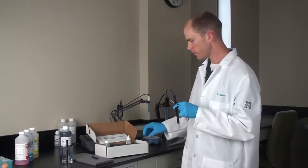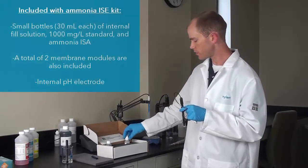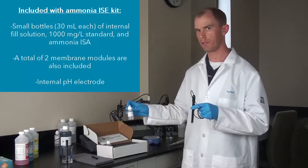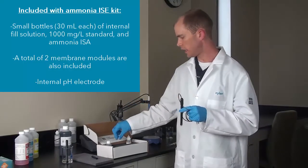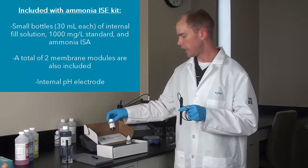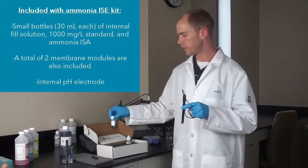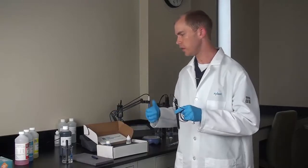To set up your electrode, first I'll show you what you get with the electrode. You get a small bottle of internal fill solution, a small bottle of standard, and a small bottle of blue ISA.